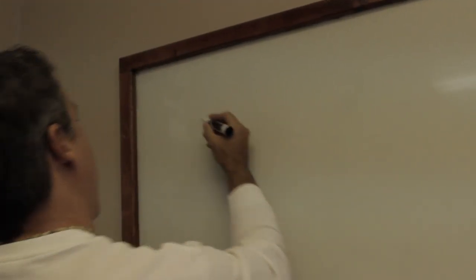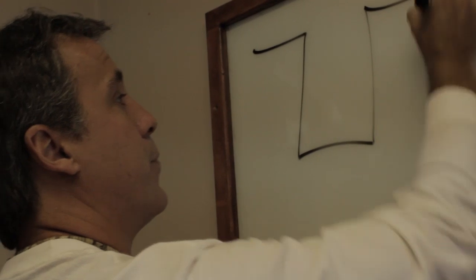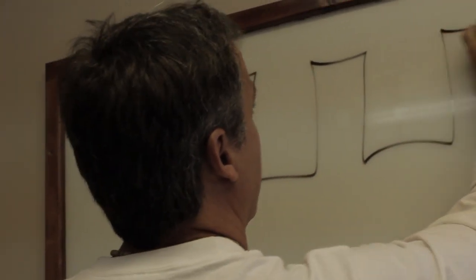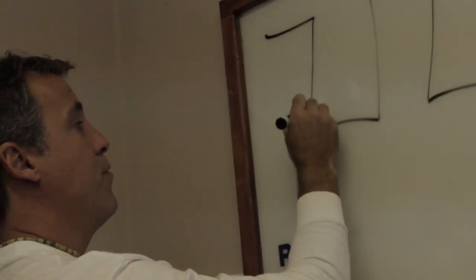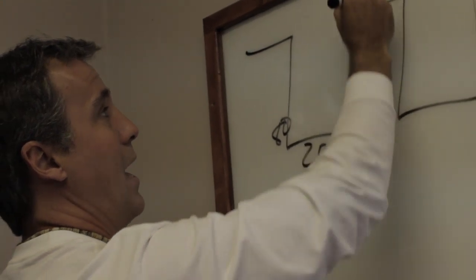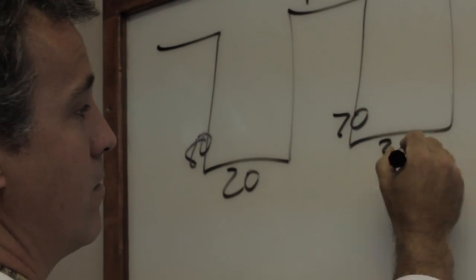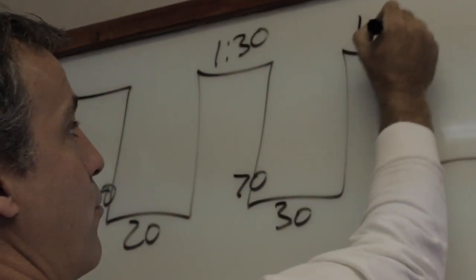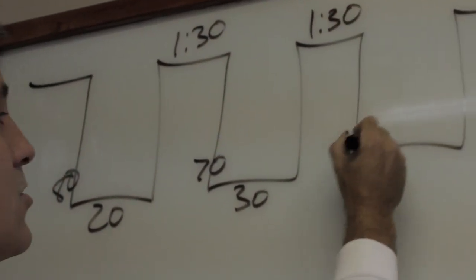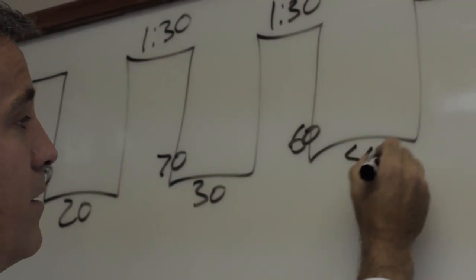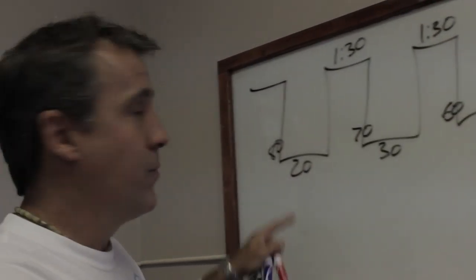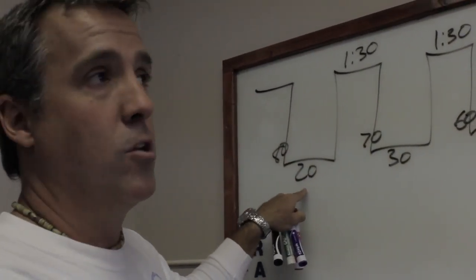Let's do a recap. We're gonna do three dives. The three dives are going to be: first dive 80 feet deep for 20 minutes, we're gonna stay out of the water for an hour and a half, the next dive is gonna be 70 feet for 30 minutes, again an hour and a half surface interval, and the last dive is 60 feet for 40 minutes.